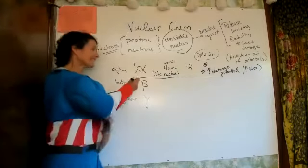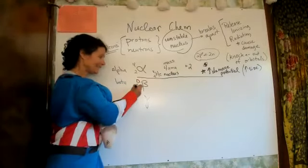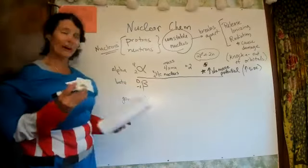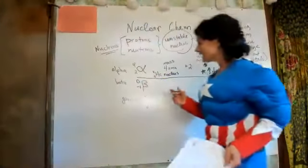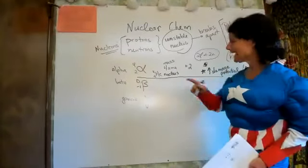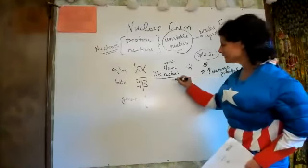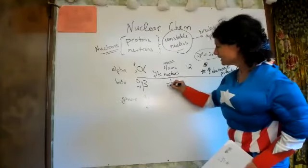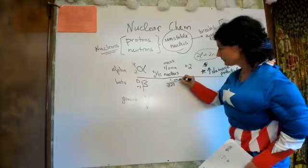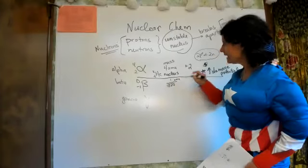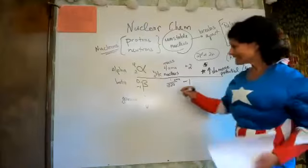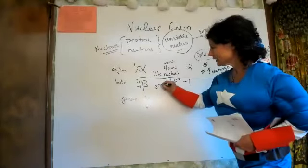Beta gets the symbol zero on top and negative one on the bottom. It's not that it has no mass — it's just that its mass is so small it's not recorded; it's really about 1/1820th of an AMU. Its charge is negative one, so basically it is an electron.